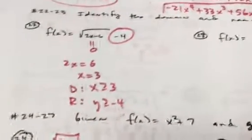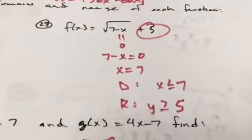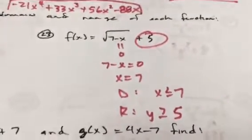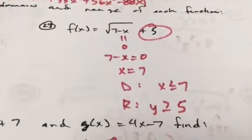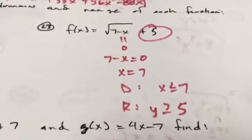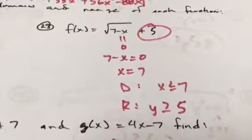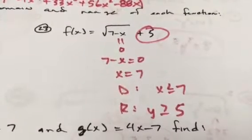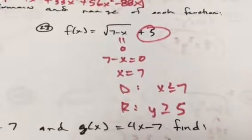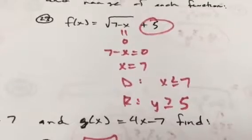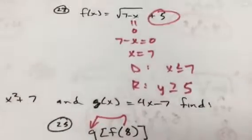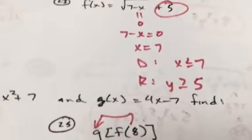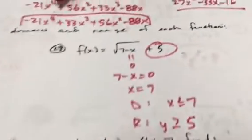On number 23, again set what's inside the square root equal to 0 — you get x = 7, but you don't want the square root to be negative, so you need values of x that are 7 or less. As you plug in allowed values like 7, 6, 5, 4, the expression gets bigger, and when you add 5 to it it continues to grow, so the range is still y ≥ 5.